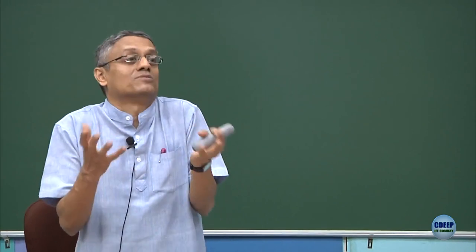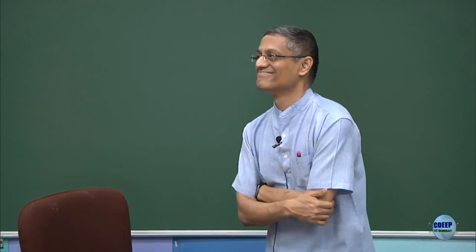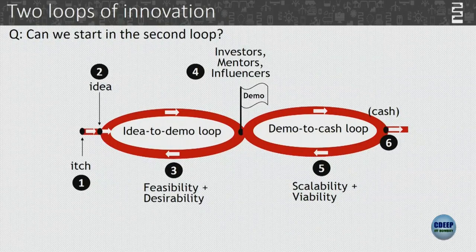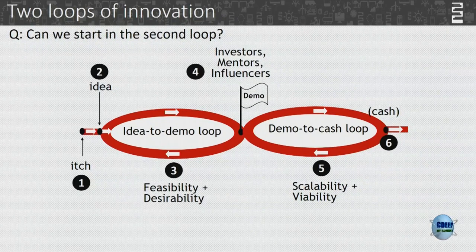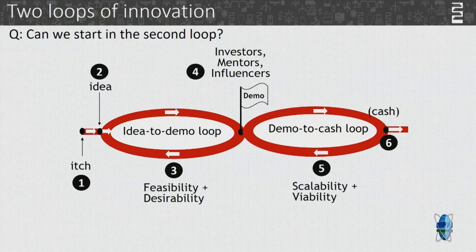It can be different in different places — sometimes you will remain in the idea-to-demo loop for some time for technology refinement, and then demo to someone. Can we start in the second loop — the demo-to-cash loop — directly? Is it possible? No technology development, nothing — directly demo to cash?